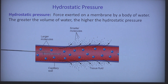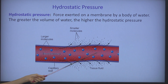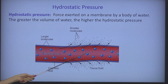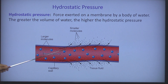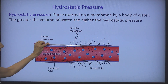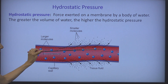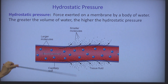Red blood cells and bigger particles are never going to be moved out. The volume of fluid — the blood — is represented by blood pressure. So the greater the blood pressure, the greater the hydrostatic pressure, and the more filtration will occur, and vice versa.